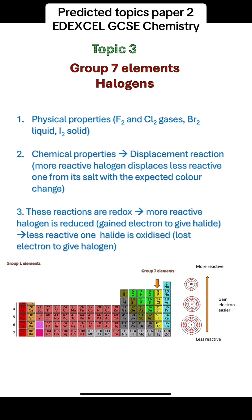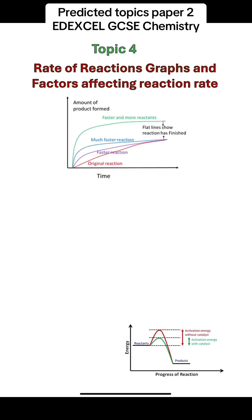Remember that displacement reactions are also redox reactions. The more reactive halogen will be reduced in this reaction because it gains electrons to give a halide, while the less reactive one, which is in the form of a halide at the start of the reaction, will be oxidised because it loses electrons to give the halogen.